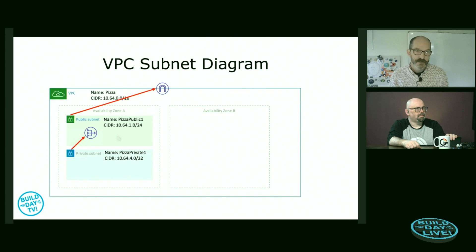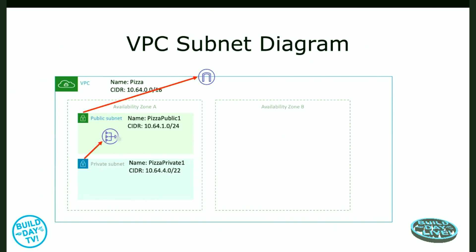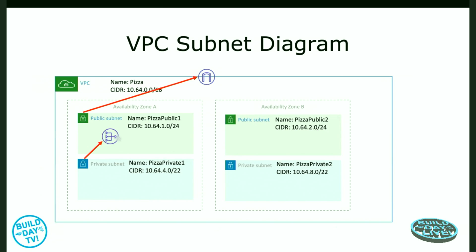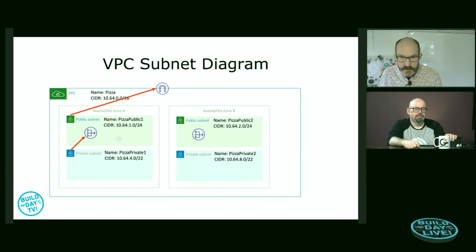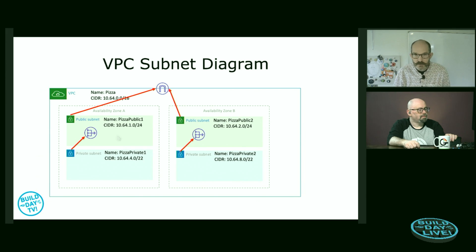We started out with two subnets in a single availability zone — a NAT gateway, an Internet gateway, and route tables. What we're going to add is mirrors of those two subnets. In a different availability zone we'll have a different public subnet — you can see the third octet in the CIDR range is different — and another private subnet. All of these fit inside the range of our VPC. We also create an additional NAT gateway and additional route tables. This replication from one availability zone to another provides a network that is redundant across multiple availability zones.